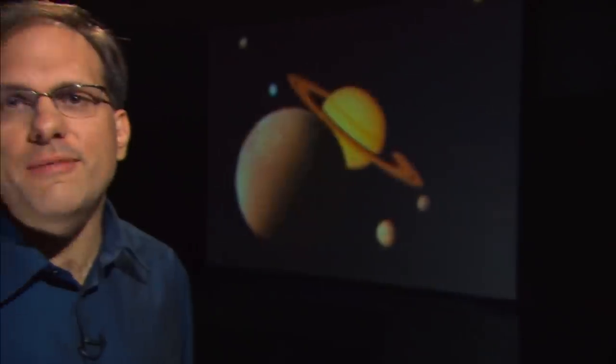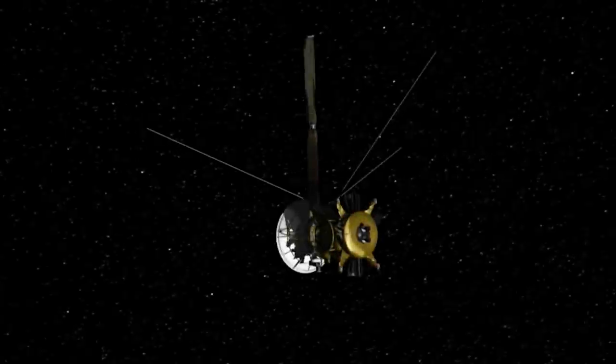To call the icy moons of Saturn strange is an understatement. These odd little worlds are utterly unlike Earth. But understanding how they formed and evolved is an important goal for scientists. Why? Because if there are so many icy moons in our solar system, there must be countless others out there among the stars.